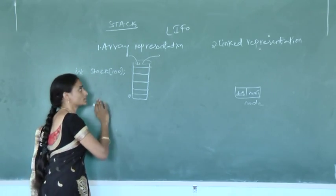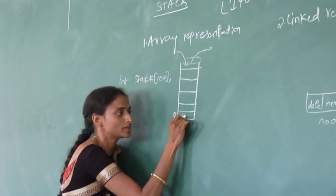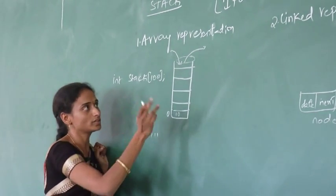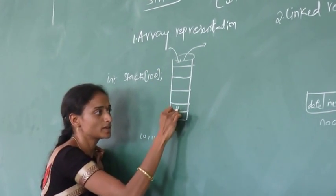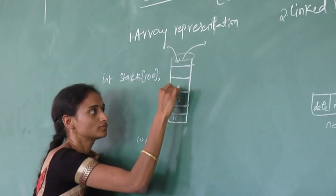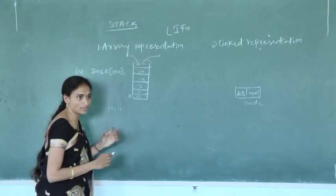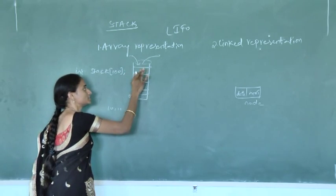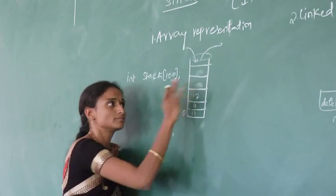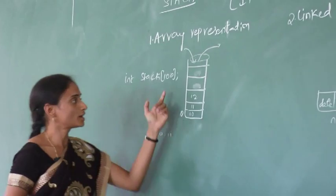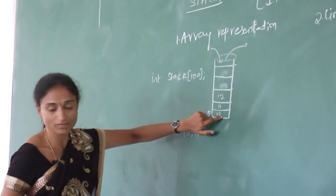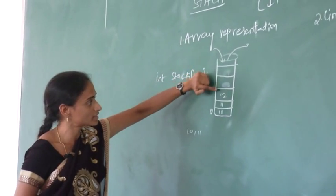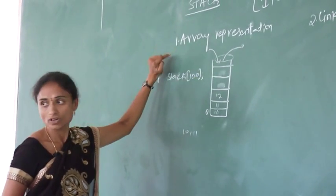For example, if we want to insert an element 10, that element will be placed here. After that, if we want to insert another element, that element will be placed here — like 12, 13, 14 and so on. If we want to delete an element from the stack, the first element deleted will be 14, then 13. Whatever element is inserted first, that element will come out last; whatever element is inserted last, that element will come out first.